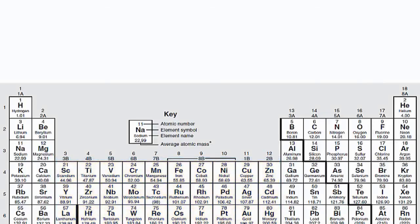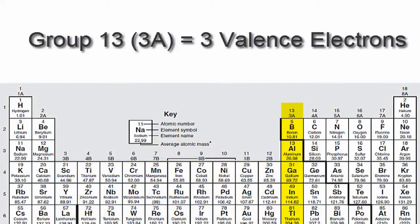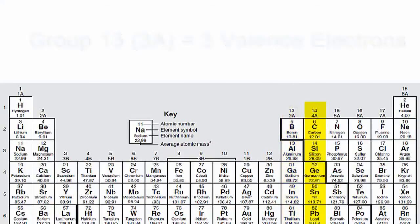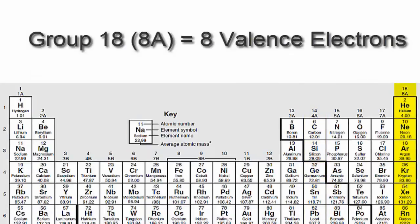We'll go to 13 or 3A, which have three valence electrons, then 14 or 4A. Each of those elements in group 14 or 4A have four valence electrons, all the way up to group 18 or 8A, which have eight valence electrons.